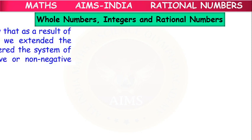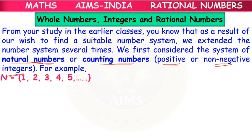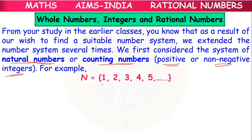Before rational numbers, in our earlier classes we have learnt about some basic number systems, starting from natural numbers. Natural numbers are also called counting numbers. They are all positive, non-negative integers — for example, the numbers starting from 1, 2, 3, 4, 5, and so on. This number set is considered as the natural number set. The symbol for the natural number set is capital N.